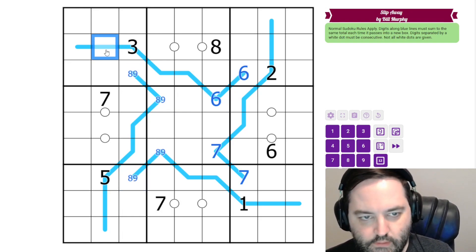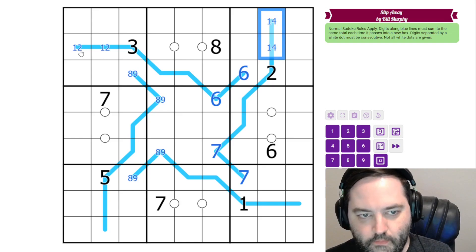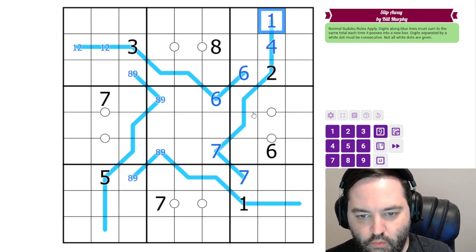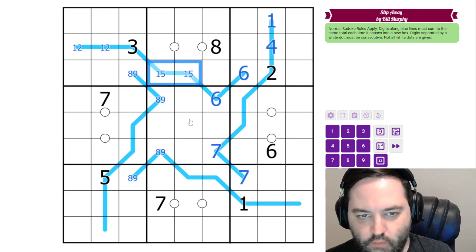And now to make 6 in 3 cells, we need 1, 2, 3. To make 7 in 3 cells, we need 1, 2, 4. The 1 looks over here to make this 4, 1 in that order. To make 6 in 2 cells, we need 1, 5 or 2, 4. But we have a 2, so that's 1, 5.